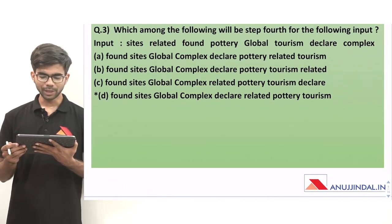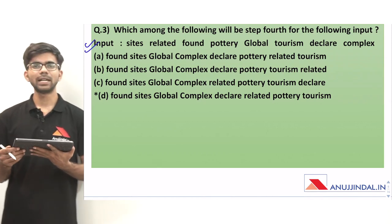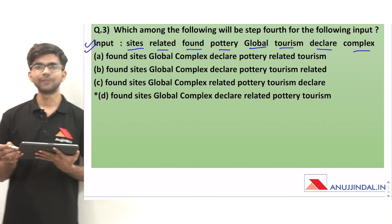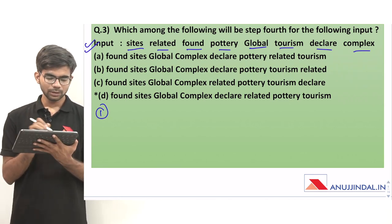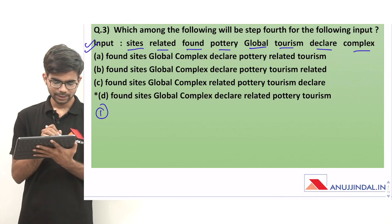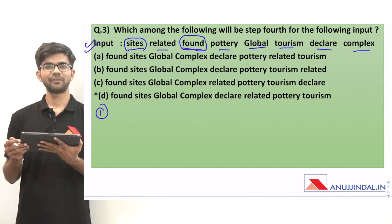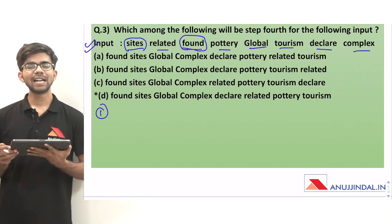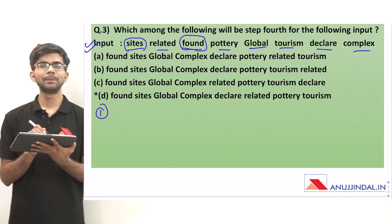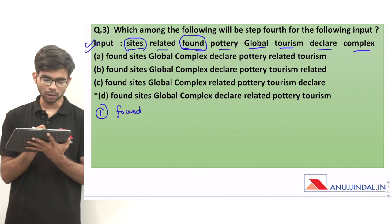Question 3: which among the following will be step 4 for the following input? You have to tell what will be the 4th step. This input has 8 words. For step 1, identify the word with the minimum letters. The words 'sites' and 'found' both have 5 letters each — the rest have more. Between 'sites' and 'found', 'found' comes first because F comes before S in the dictionary. So step 1 is: found, followed by the rest of the words in the same order.